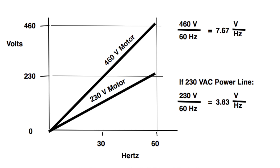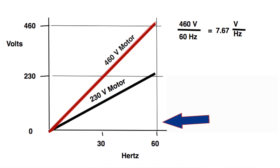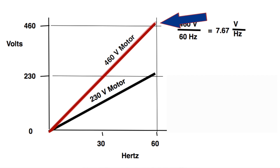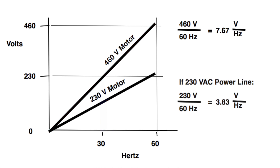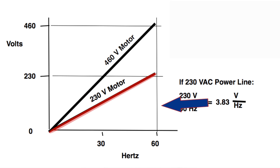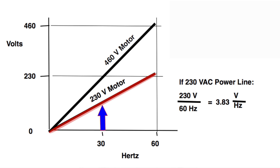To better understand flux optimization, let's step back and look at how VFDs used to operate. Previously, VFDs would output the same amount of torque regardless of the application. Notice, if we look at a 460V system at 60Hz operation, the VFD would output 460V. That same system, when operating at 30Hz, will output 230V. Likewise, a 230V system at 60Hz will output 230V, and at 30Hz, output only 115V.